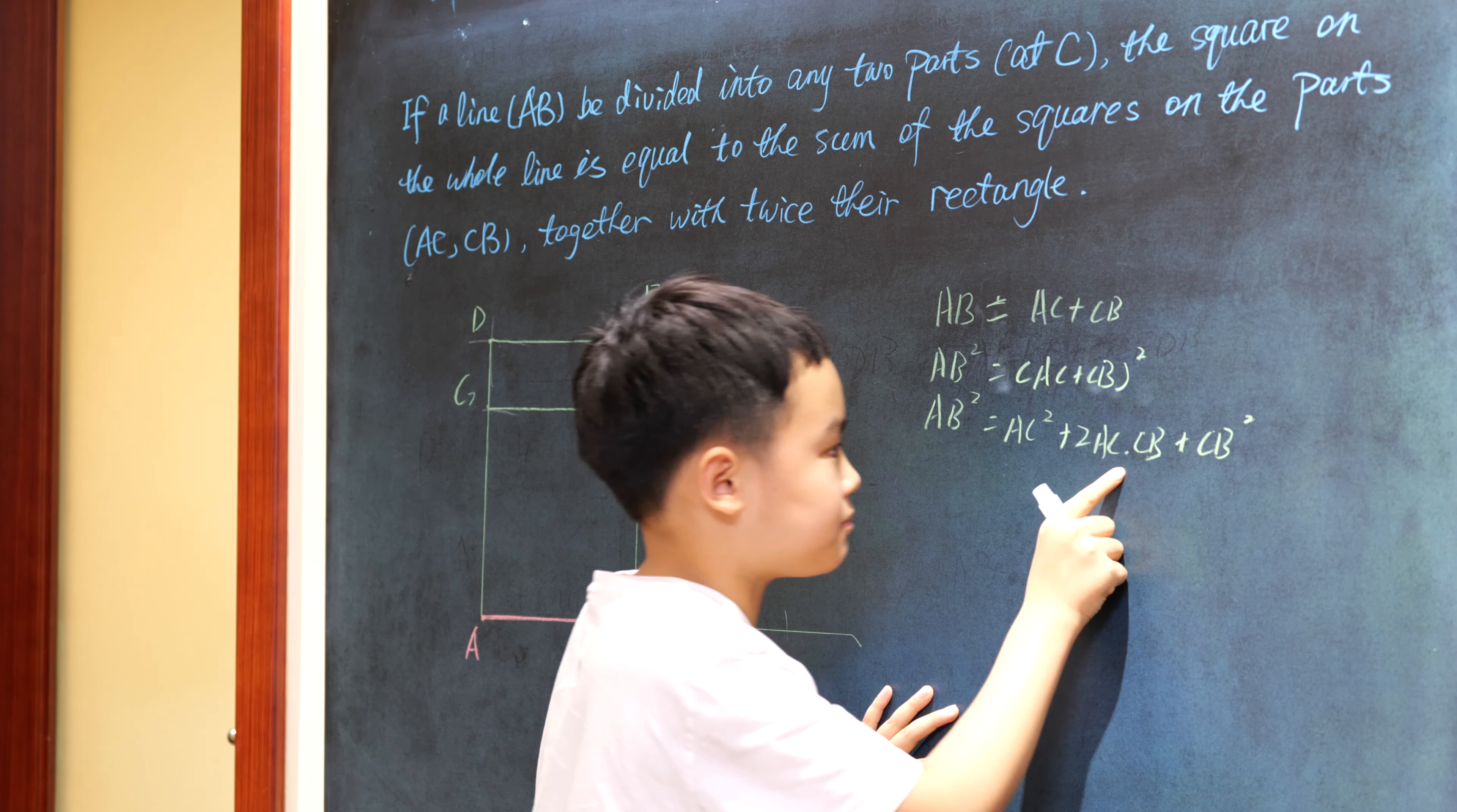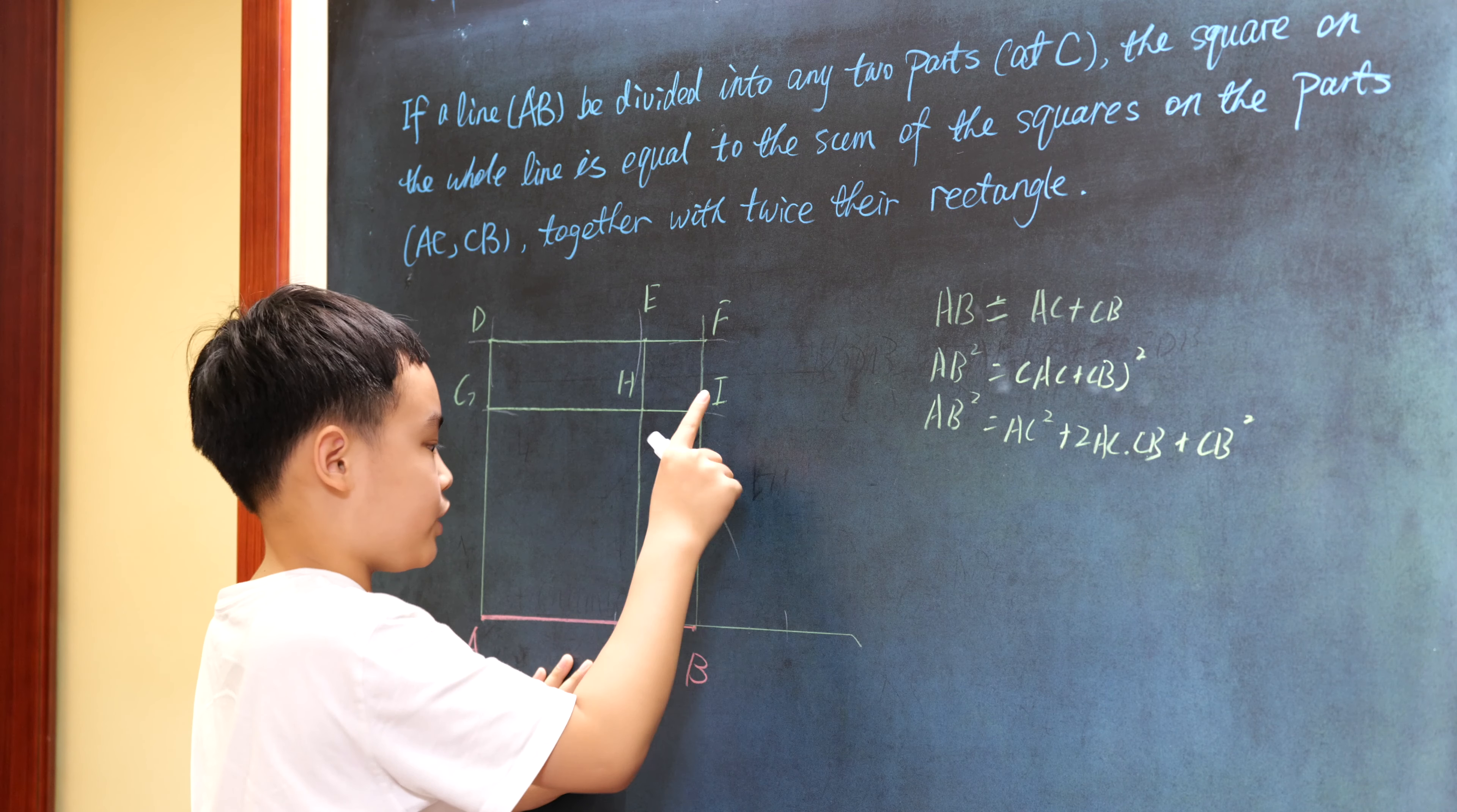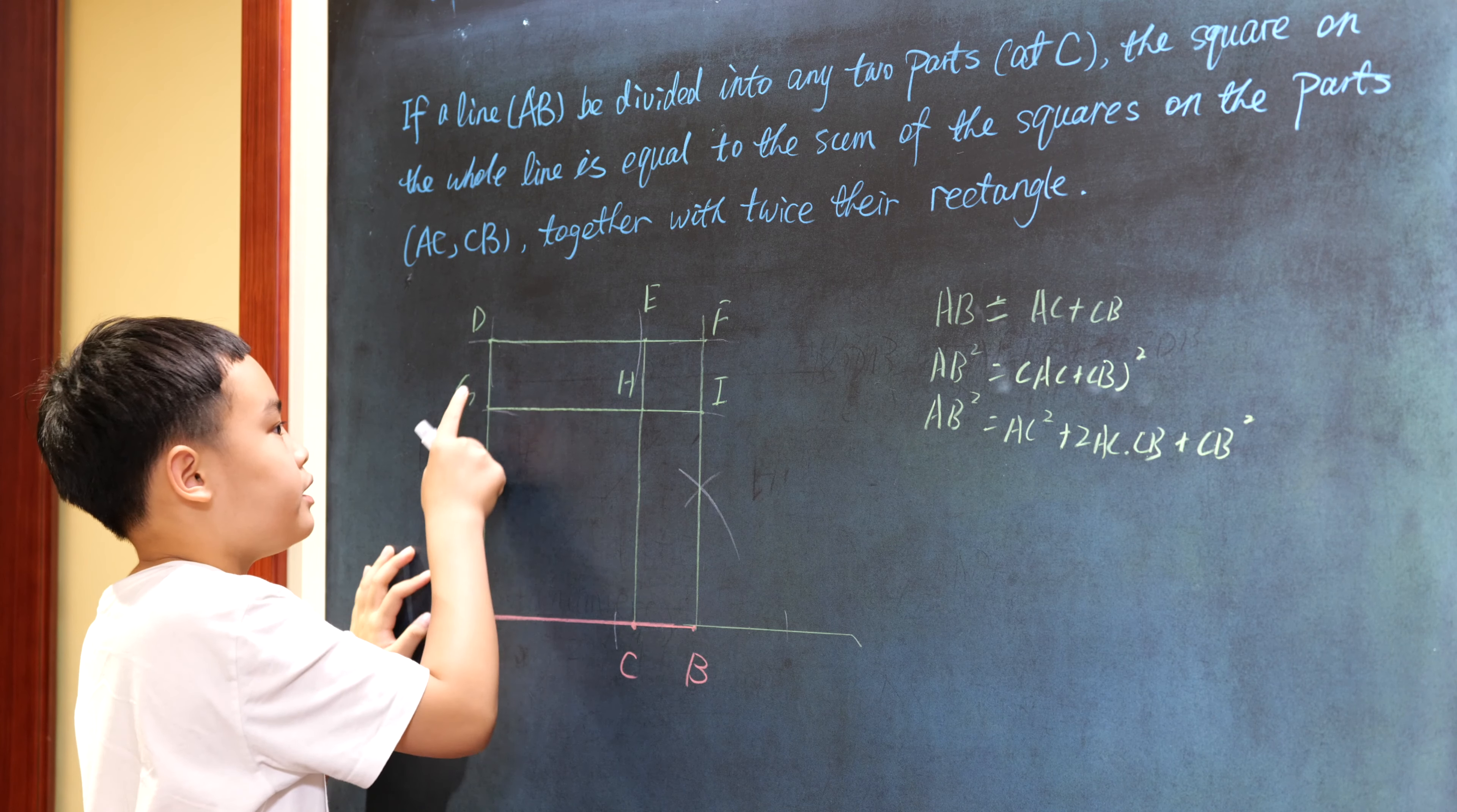Two AC times CB: first AC times CB shall be CHIB, and then we have another AC times CB, and then we'll get figure DGHE.